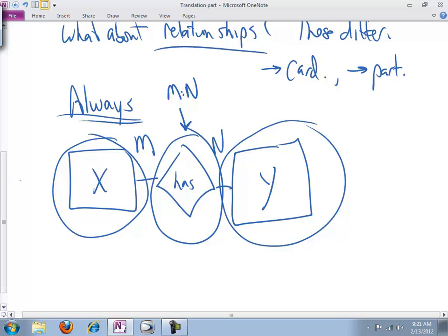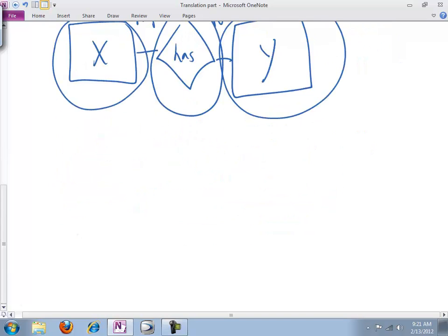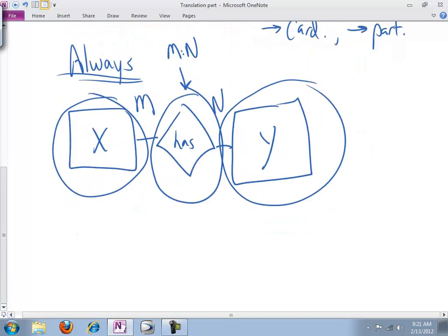So always it'll be the case that there will be a table for X, there will be a table for 'has', and there will be a table for Y. I think it's a good idea when you're in the process of translating an ER diagram into a set of relational schema for you to draw a circle around what's going to become a table. We have three circles here.